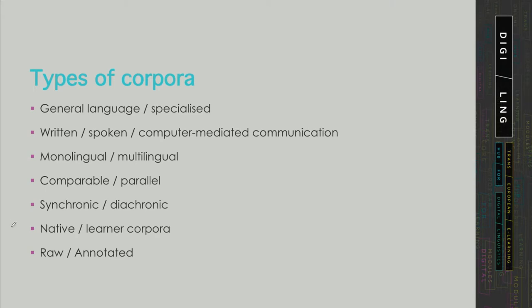The next distinction is between native and learner corpora — so language produced by native speakers or by learners of a language. And then in terms of the annotation status, corpora can contain either raw texts or annotated texts.